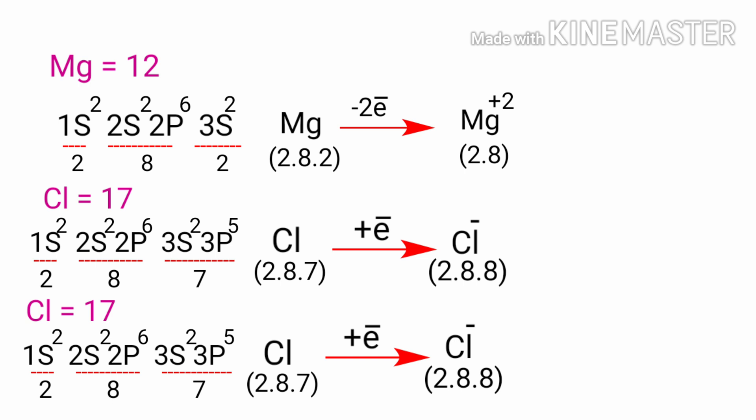Therefore, it tends to gain an electron to create an ion with 17 protons, 17 neutrons and 18 electrons, giving it a net charge of minus one. It is now referred to as a chloride ion.